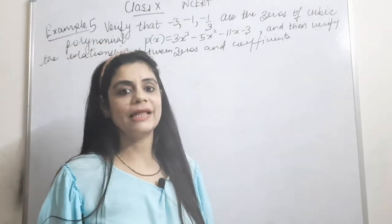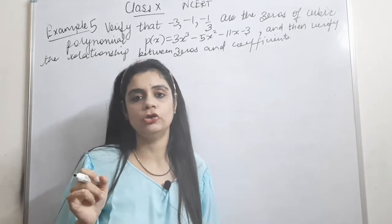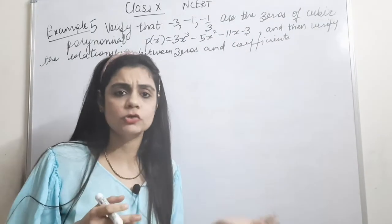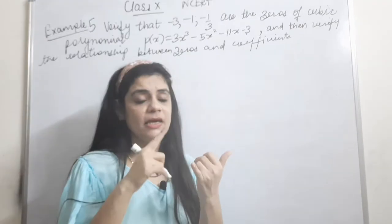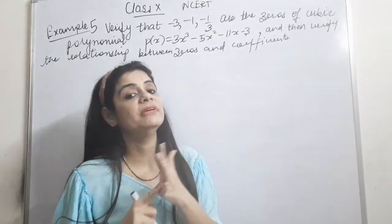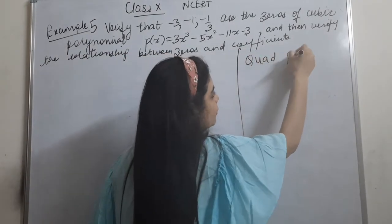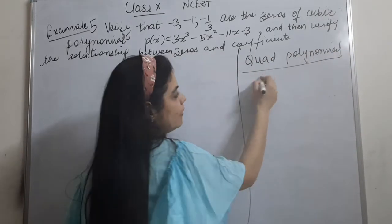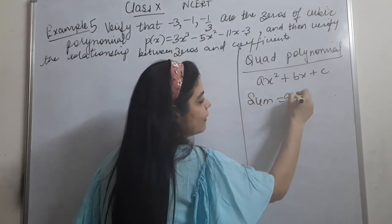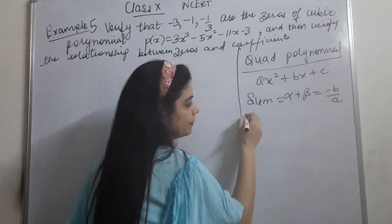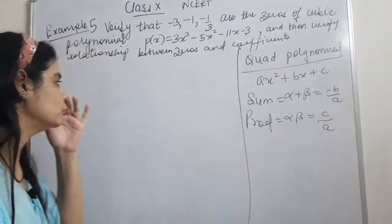Before starting example number 5, I would like to tell you something about cubic polynomials. I have told you about quadratic polynomials — there are two zeros, alpha and beta. Alpha plus beta is the sum equal to minus b upon a, and alpha times beta is the product equal to c upon a. Now we move on to cubic polynomials.